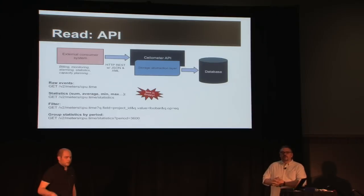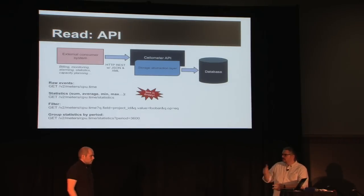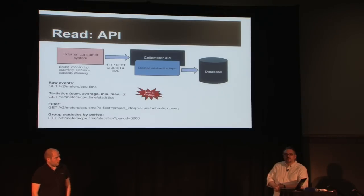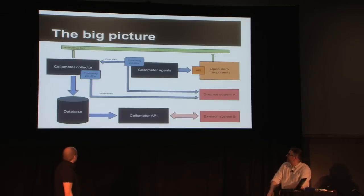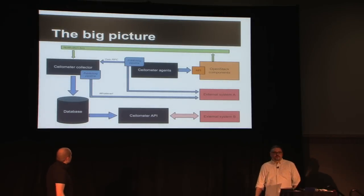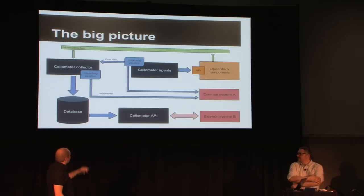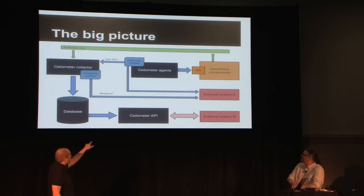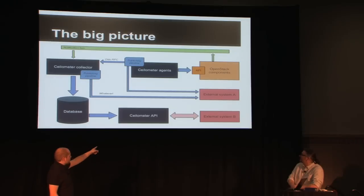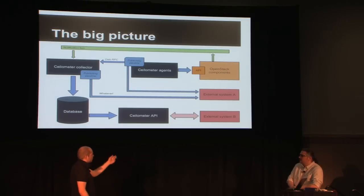Francois Charlier and I are leading a session on Thursday on API improvements. This is the global architecture: the agent and the collector fetch metrics from the API and the notification bus, publishing through the pipeline to an external system or to the collector, and reading back with the API from any of your systems.